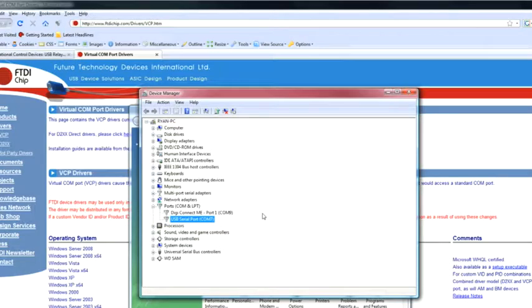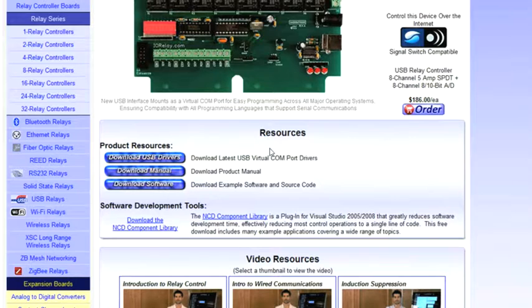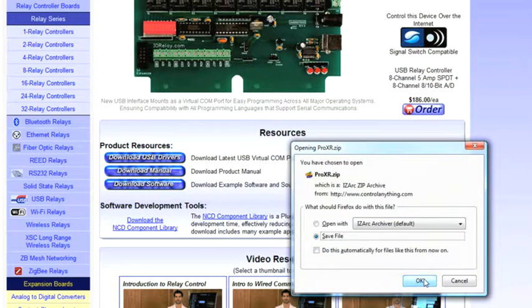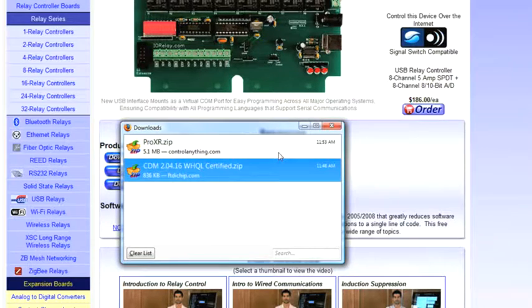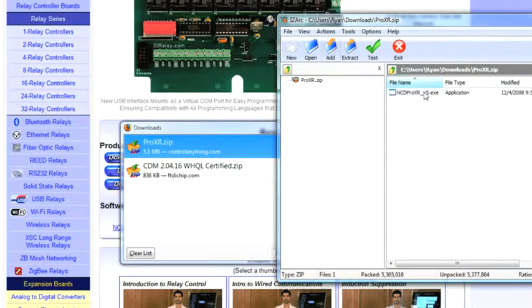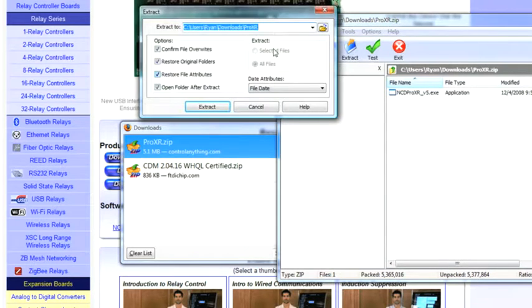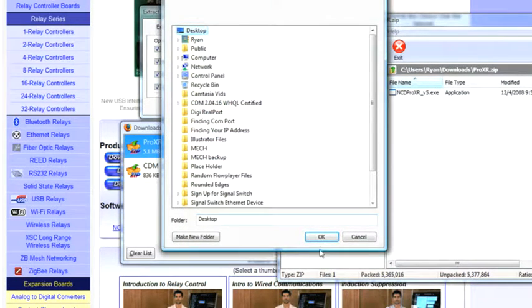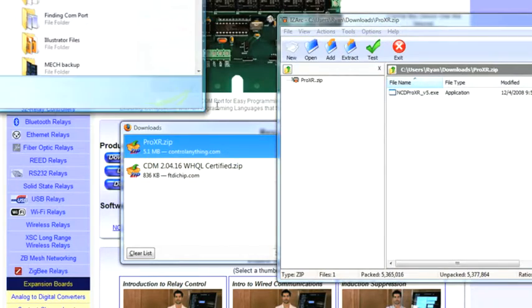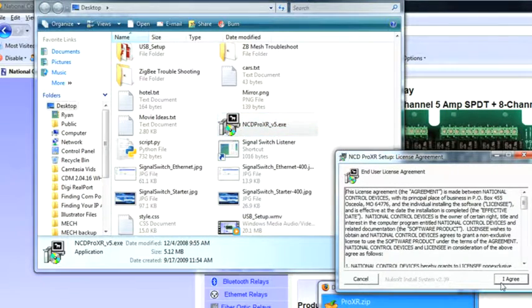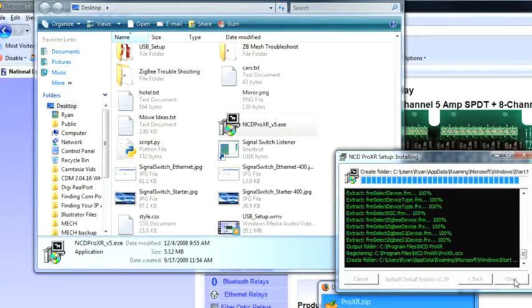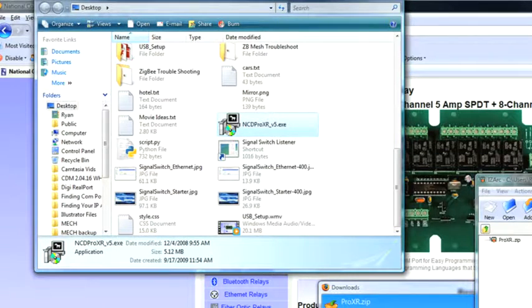Now what we'll want to do is go back to ControlAnything.com, and under the Resources section on the Product page, you'll want to choose Download Software. You'll want to save file. And once that file is completed downloading, you'll want to open it. Say Extract. I'm just going to extract mine onto the desktop again. Extract. From here, you'll want to open that file. Say I agree. And install. Close. Close out of this window.